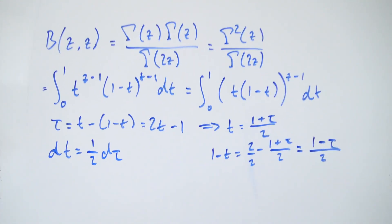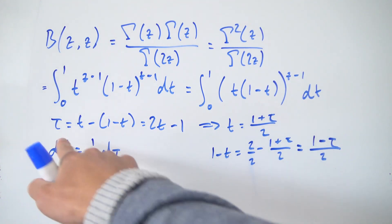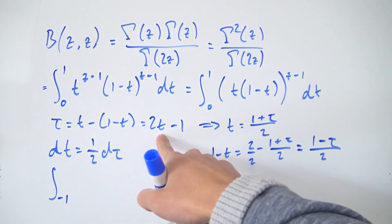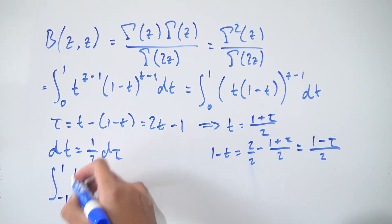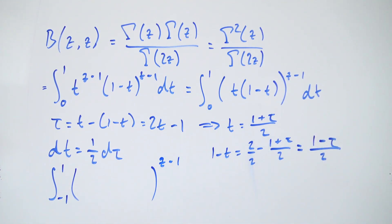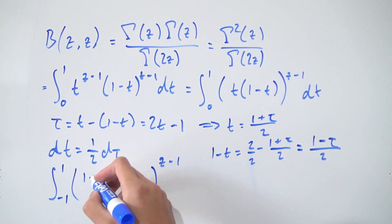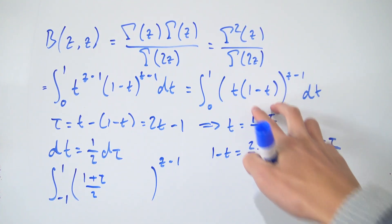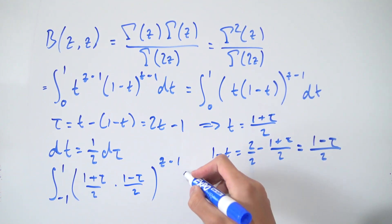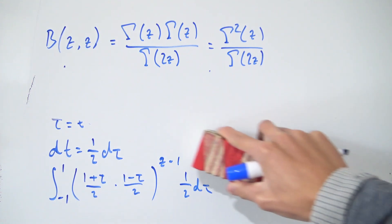Now let's plug everything back into the integral. For the bounds: plugging t=0 gives tau = negative 1, and t=1 gives tau = 1. So the integral becomes from negative 1 to 1 of (1 plus tau)/2 times (1 minus tau)/2, all raised to z minus 1, times one half d-tau.